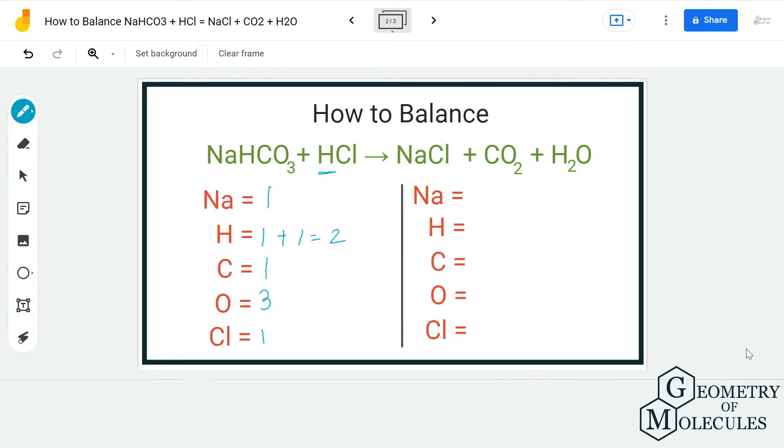So I have one sodium atom, two hydrogen atoms over here, one carbon atom, two plus one equals three oxygen atoms. Again, do not forget about this oxygen over here, and then I have one chlorine atom.